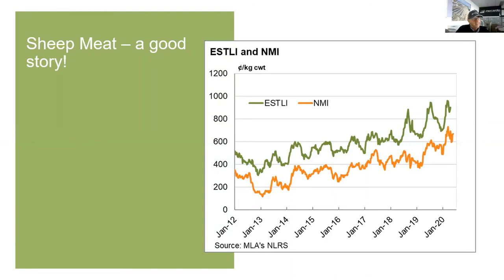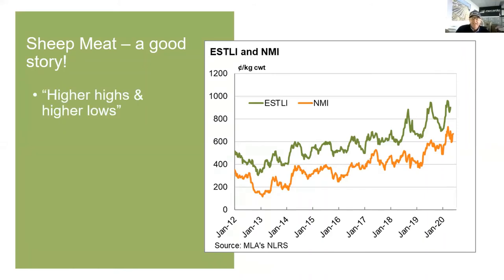A New Zealand farmer mentioned that when he sold his ewes, they paid almost as much for the ewes as for the lambs — and he questioned whether they realised mutton isn't as good tasting as lamb. What's happening is these markets are using mutton differently — in slow cooks and stir fries. Mutton is a great product because it's got protein, it's red meat so it has colour and texture, and even if you cook it for a long time it's still going to hold up. So we've got higher highs and higher lows, which is a really good thing.